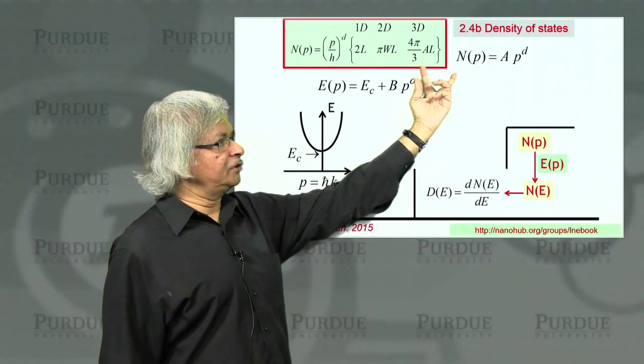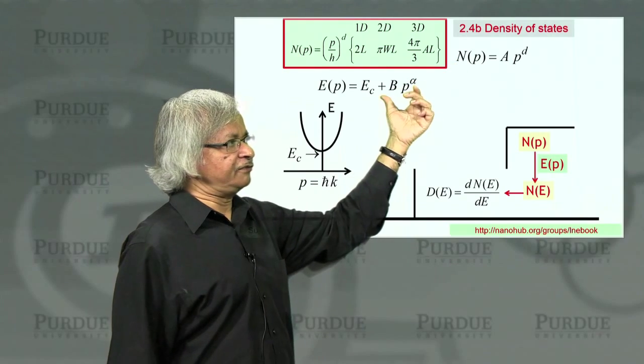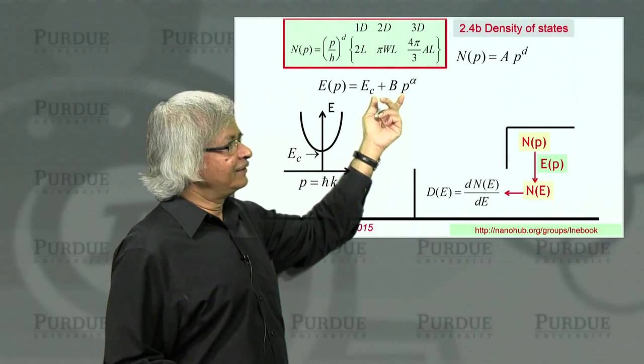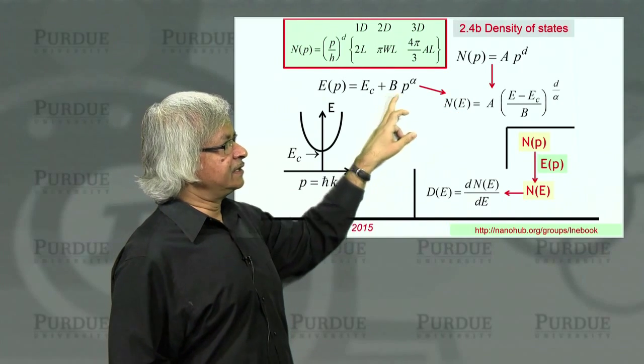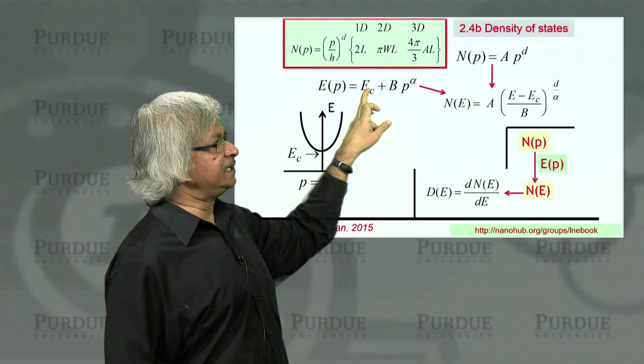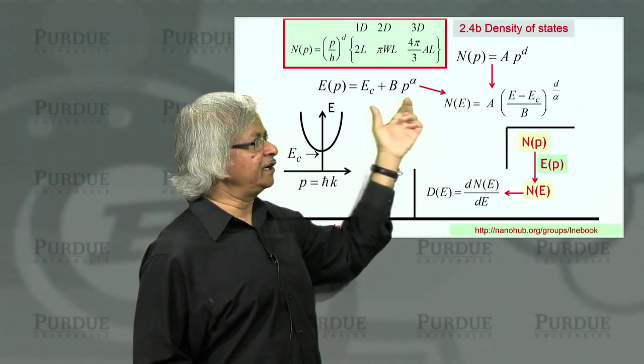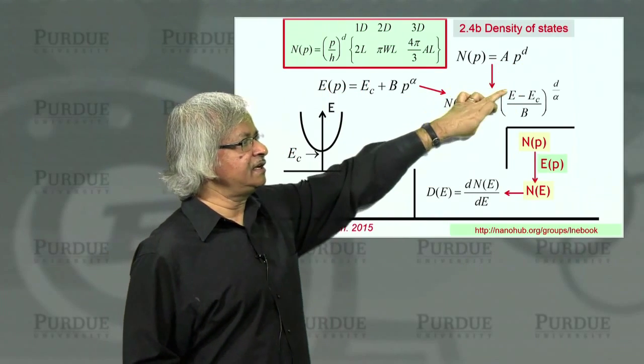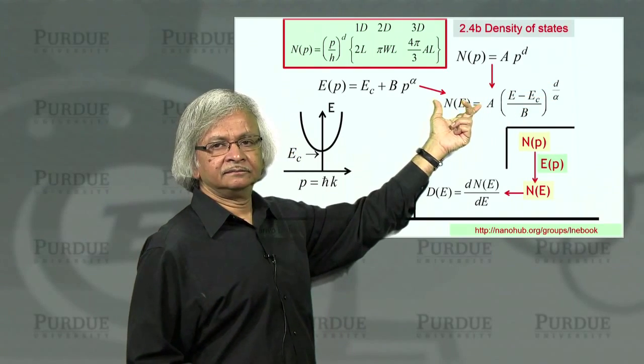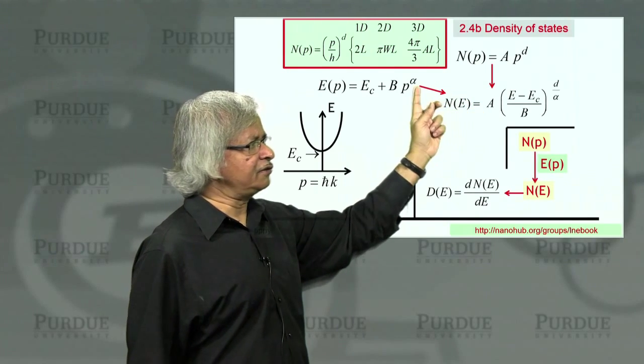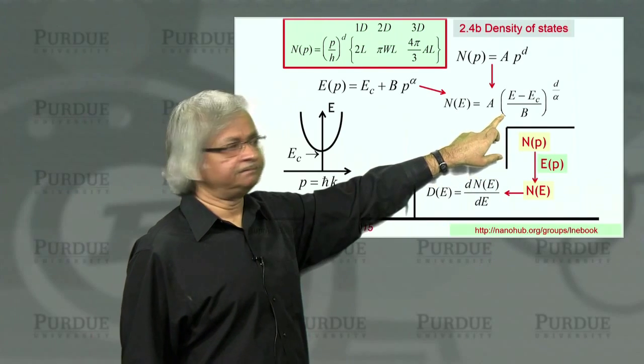What you want to do is combine those two things to get an expression for N as a function of E. This requires a bit of algebra. What you'd get is: p to the power alpha is like E minus Ec, and what you want, N, is like p to the power d. So you have to take E minus Ec and raise it to the power d over alpha. And that will give you N. From this and this, you can eliminate p to obtain this expression.